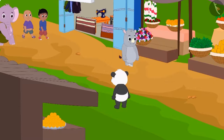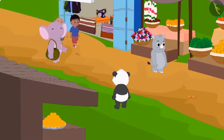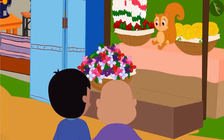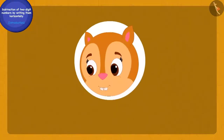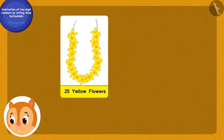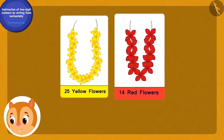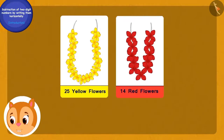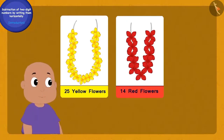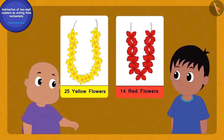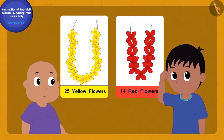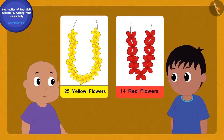One day Raju and Bablu went to Chanda's flower shop. One garland of Chanda's had 25 yellow flowers and the other garland had 14 red flowers. Bablu asked Raju: 'Can you tell me how many more flowers are there in Chanda's yellow flower garland than her red flower garland?' Raju scratched his head and said no.